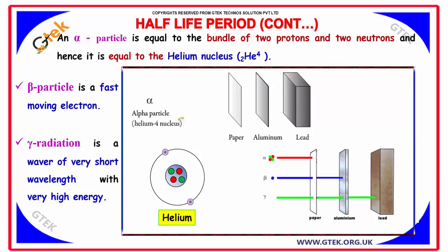Let's talk about the three different rays. Alpha particle is equal to the bundle of two protons and two neutrons and hence it is equal to the helium nucleus. Beta particle is a fast-moving electron and gamma radiation is a wave of very short wavelength with very high energy.